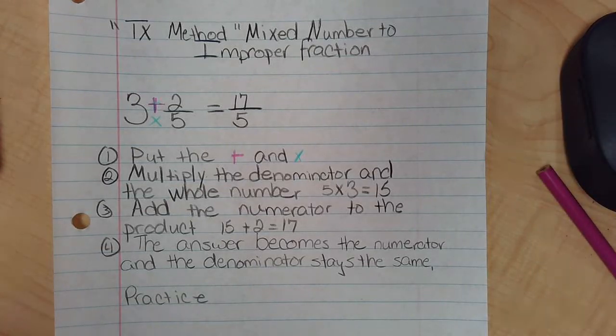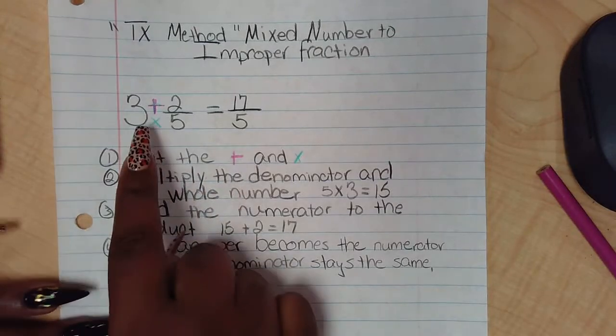Hello boys and girls, today's video is about turning improper fractions into mixed numbers and mixed numbers into improper fractions. So the first thing we're looking at is the text method - mixed number to improper fraction. I have an example of 3 and 2/5 equals 17 over 5. So what we're going to do is put what you see.